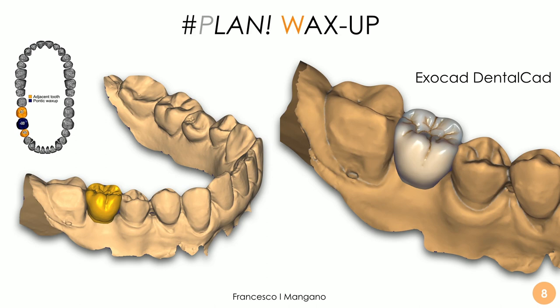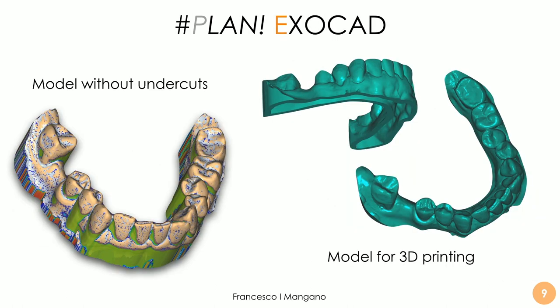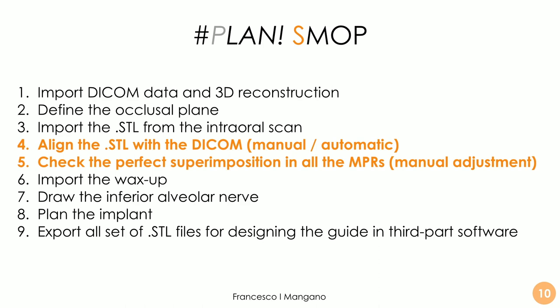The plan usually starts with a wax-up, which is very useful even for a single implant case, because it gives valuable information on the inclination of the implant — not only the position. Of course with multiple implants, the position is also very important information coming from the wax-up. For every single case we plan our wax-up in Exocad DentalCAD and then upload this information into our guided surgery software. We also prepare a model without undercuts and a model ready for 3D printing so everything is ready for printing the model to check the fit of the guide.